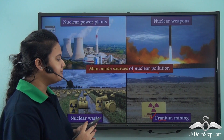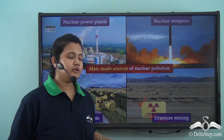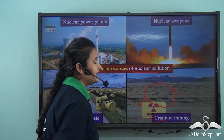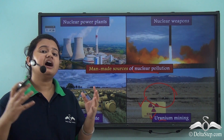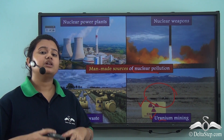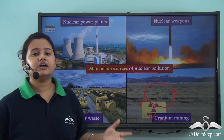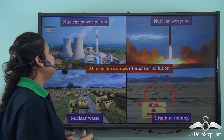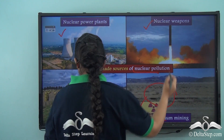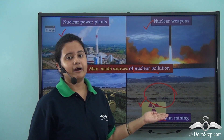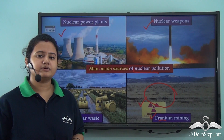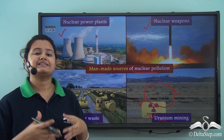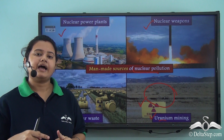In a uranium mine we often see signboards put up to demarcate the area as prohibited, because uranium is a highly radioactive substance which emits a lot of radiations in the environment and causes nuclear pollution. So the man-made sources of nuclear pollution are: nuclear power plants, nuclear weapons, disposal of nuclear waste, and uranium mining. The sources of nuclear pollution as mentioned can be classified into two types: natural and man-made.